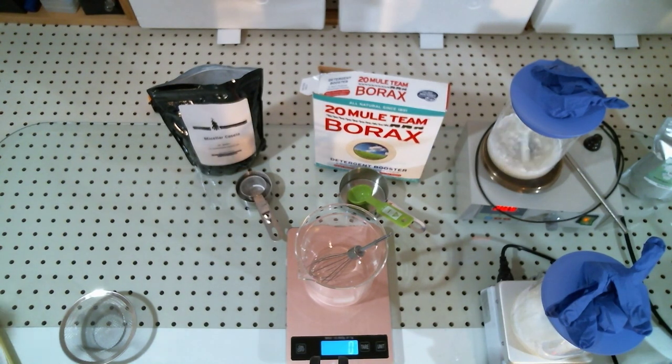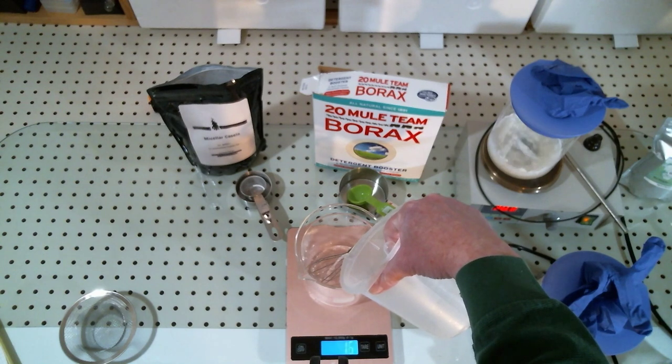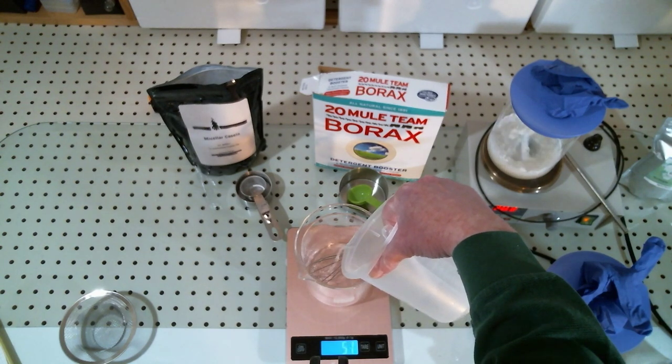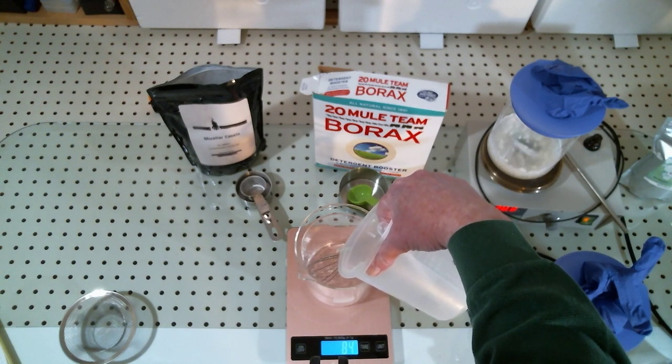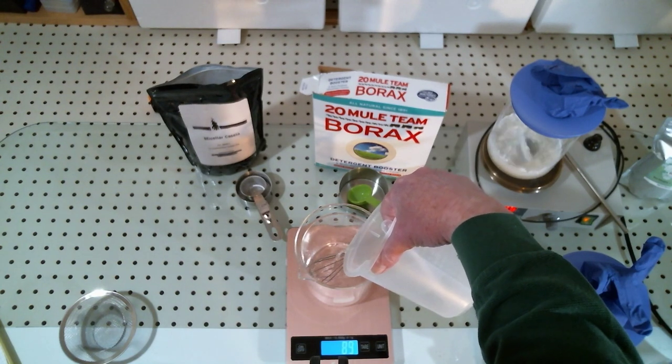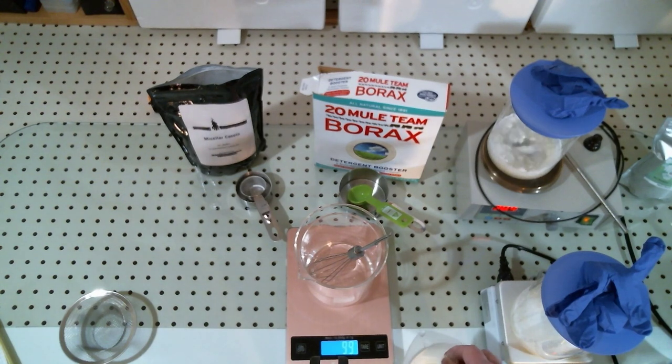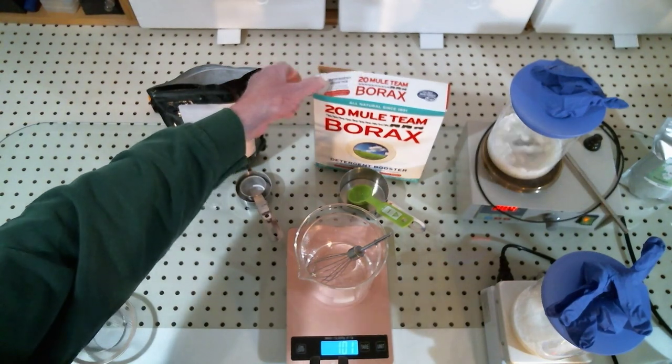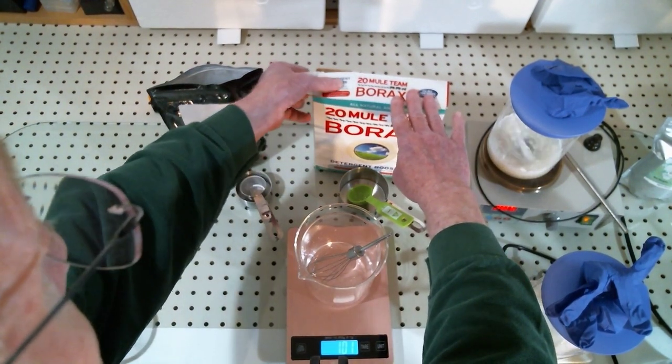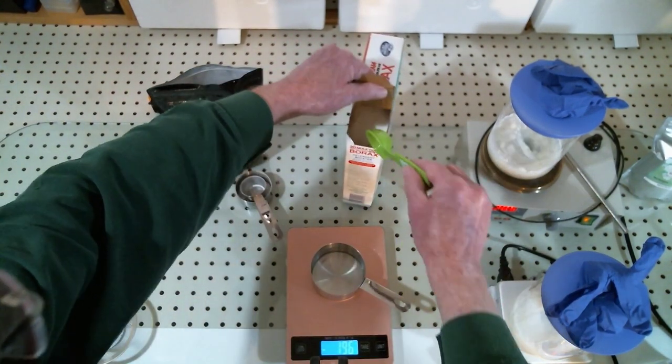For the third formula we're going to go back to using weights as a direct comparison to the first formula, so there are no changes and we introduce as few variables as possible. It's going to be 100 grams of water, and to the water we're going to add 10 grams of borax. The borax serves the same purpose as the ammonia in that it is the alkali that dissolves the casein.